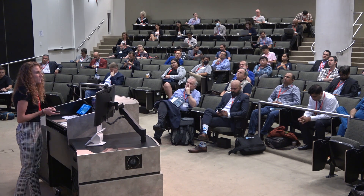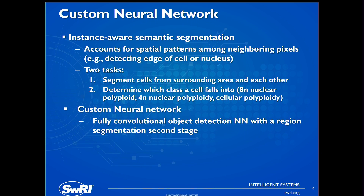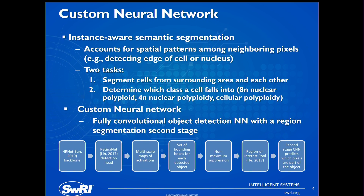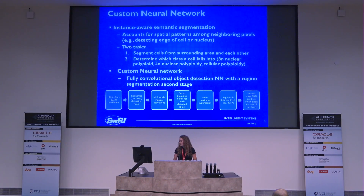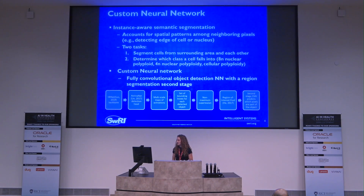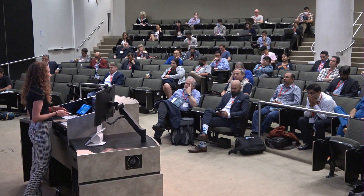Our custom neural network is a fully convolutional object detection neural network with a region segmentation second stage. We used a backbone based on HRNet and a detection head based on RetinaNet. This produces multi-scale maps of activations, which are a set of potential bounding boxes for each detected object. We then use non-maximum suppression to eliminate duplicate or overlapping bounding boxes, resulting in one bounding box per identified polyploid cell. A region-of-interest pool retrieves features from a previous layer, which is fed into a second-stage convolutional neural network that predicts which pixels belong to the detected polyploid cell.